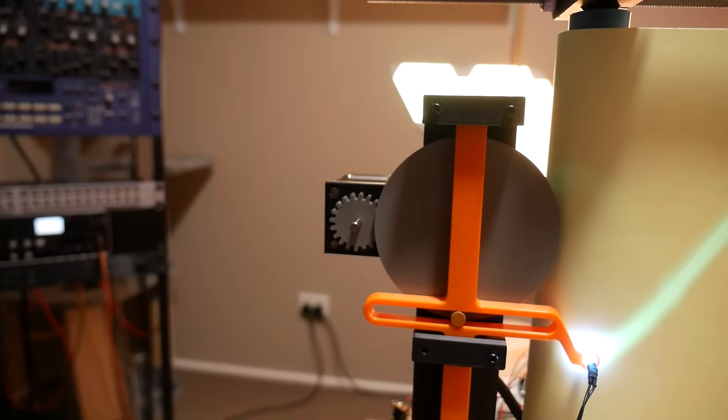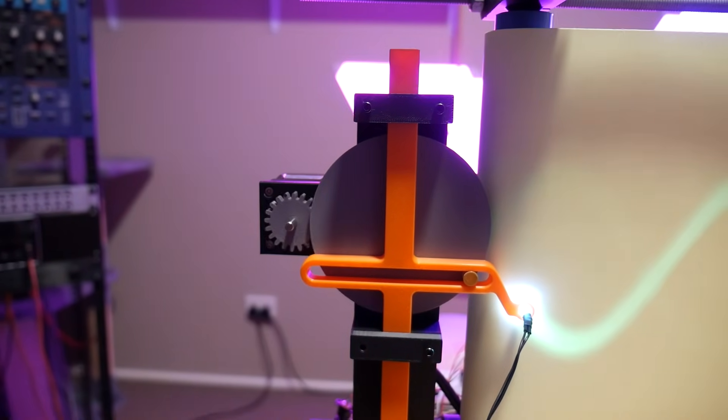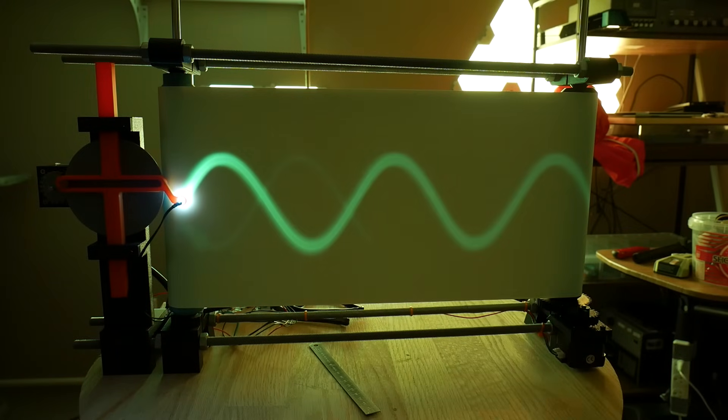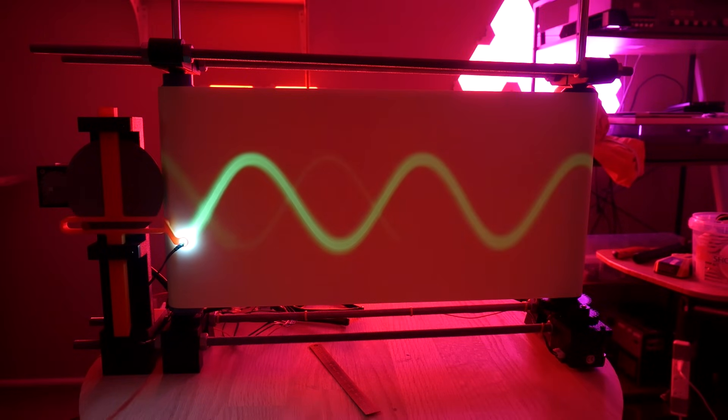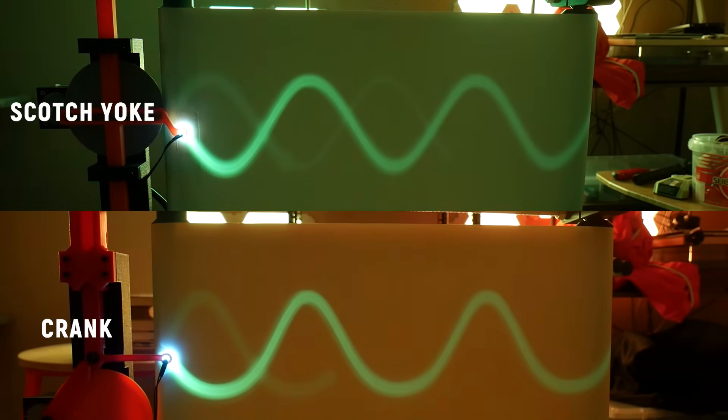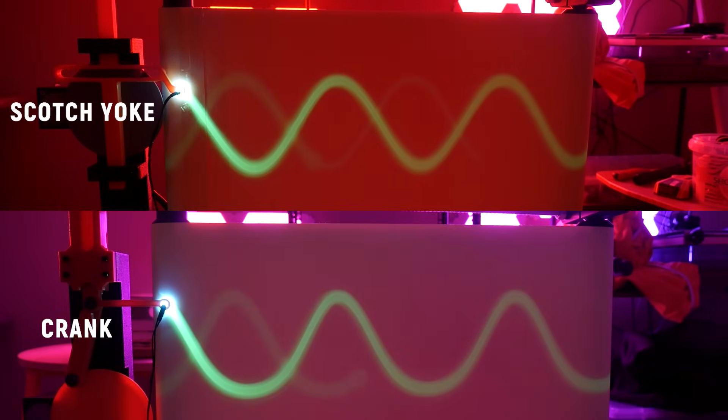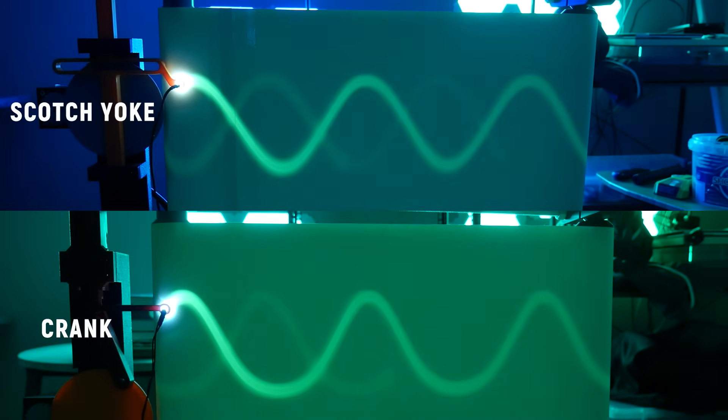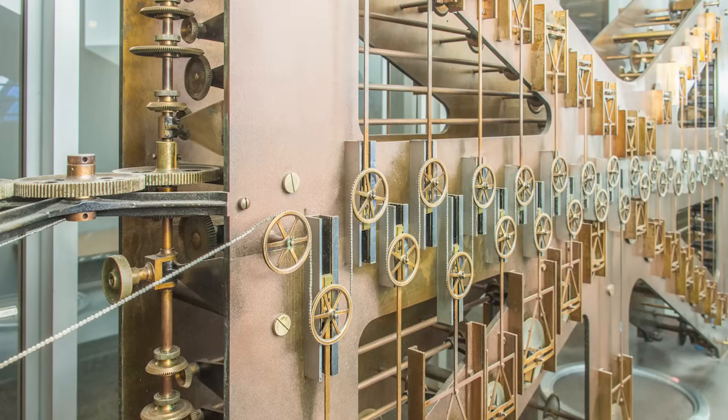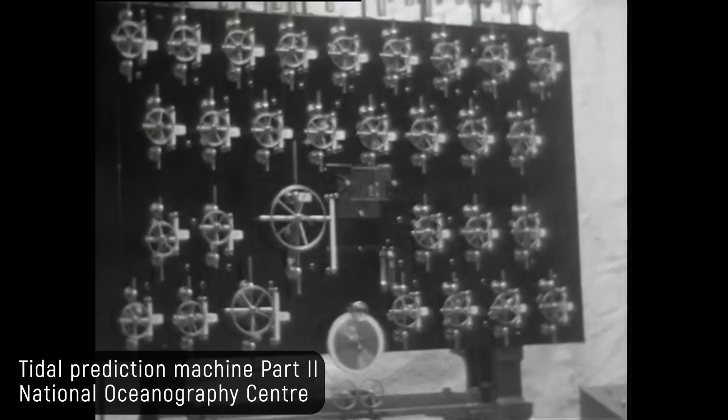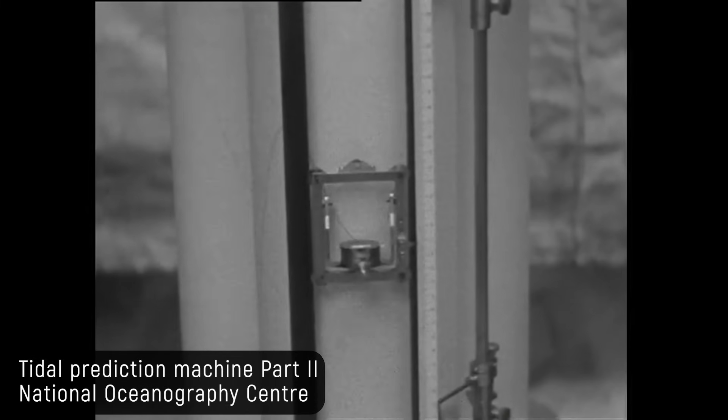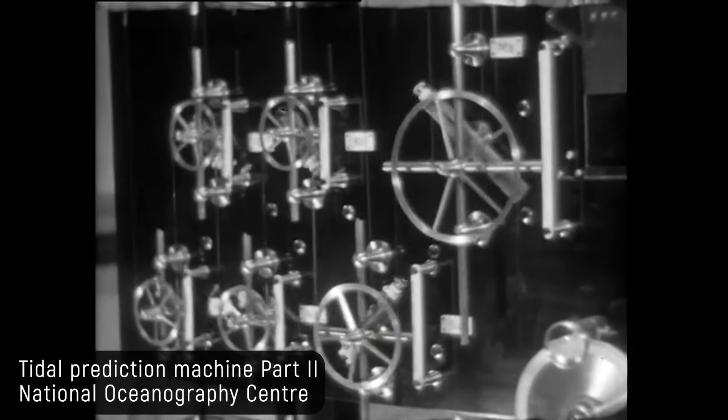That is to say, the scotch yoke has one major advantage over both the sun and planet gear and the crank. It produces a perfect sine wave. It's hard to see it just by looking at it, but if I plot the amplitude over time of a crank and scotch yoke and put them side by side, you can see that the crank doesn't produce a perfect sine wave. It's close, but only the scotch yoke is 100% accurate. And for some applications, this difference is really important. Early tide prediction machines used many scotch yokes to generate the cosine values needed to calculate and predict tides. These mechanical computers are beautifully complex and far beyond the scope of my knowledge, but it's an excellent example of where this mechanism shines.